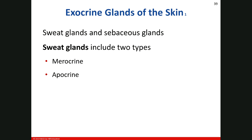Let's talk about exocrine glands. We have generalized sweat glands made up of two types — merocrine and apocrine — and then we have sebaceous glands. What's an exocrine gland? It has ducts. The endocrine glands do not. Exocrine glands emit secretions into the ducts, and endocrine glands emit secretions into the interstitial tissue fluid or into the blood supply. Your pancreas is actually the only organ that is both — it's an exocrine and an endocrine gland.